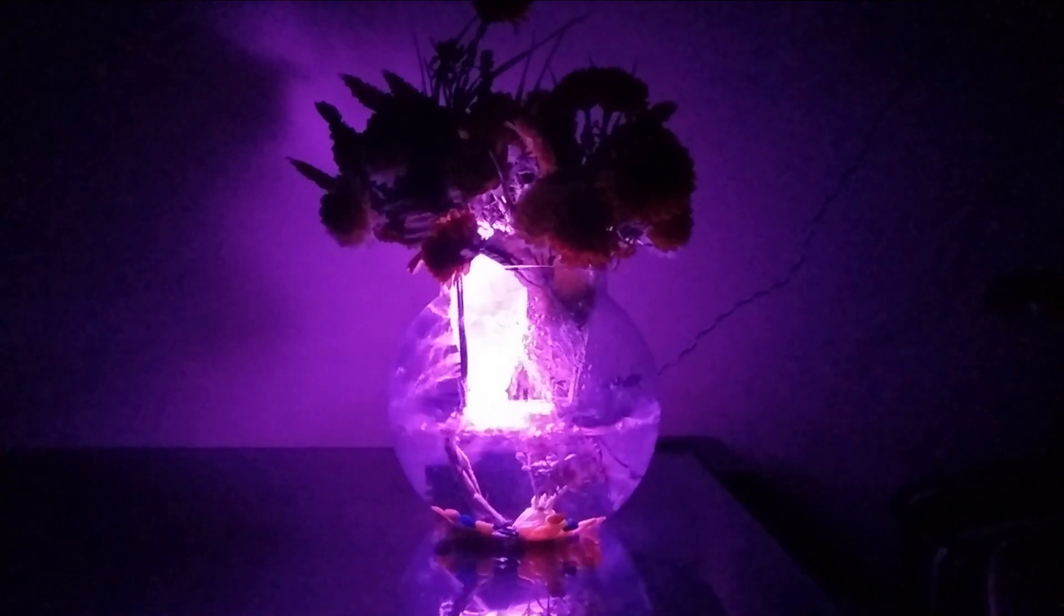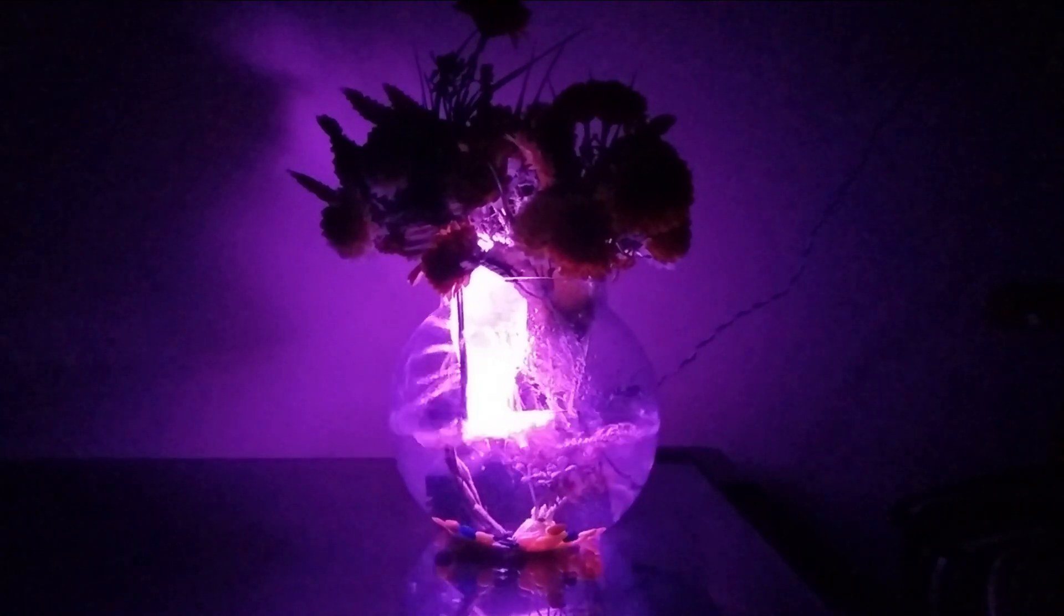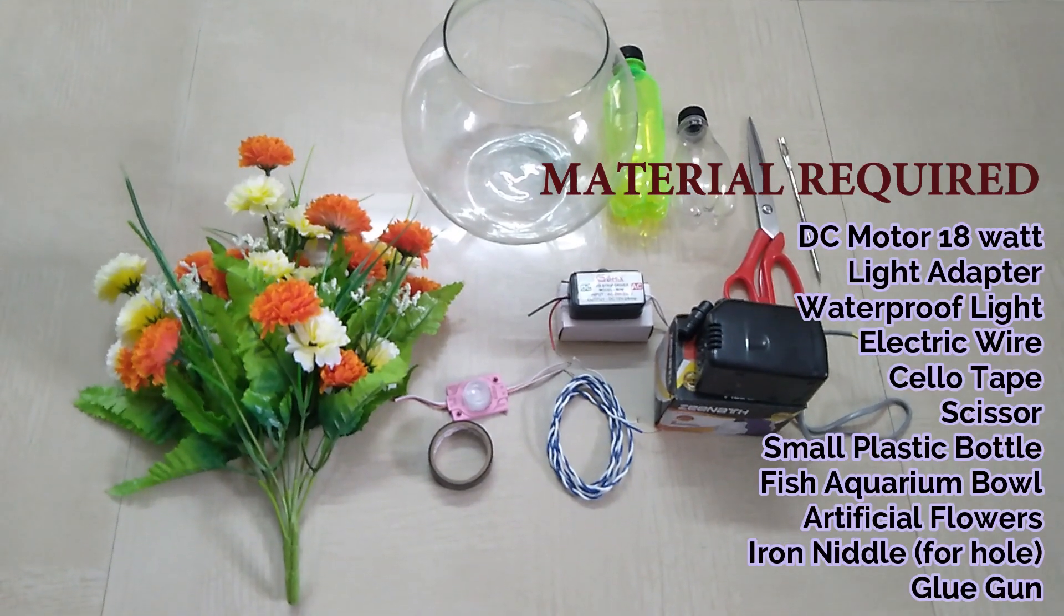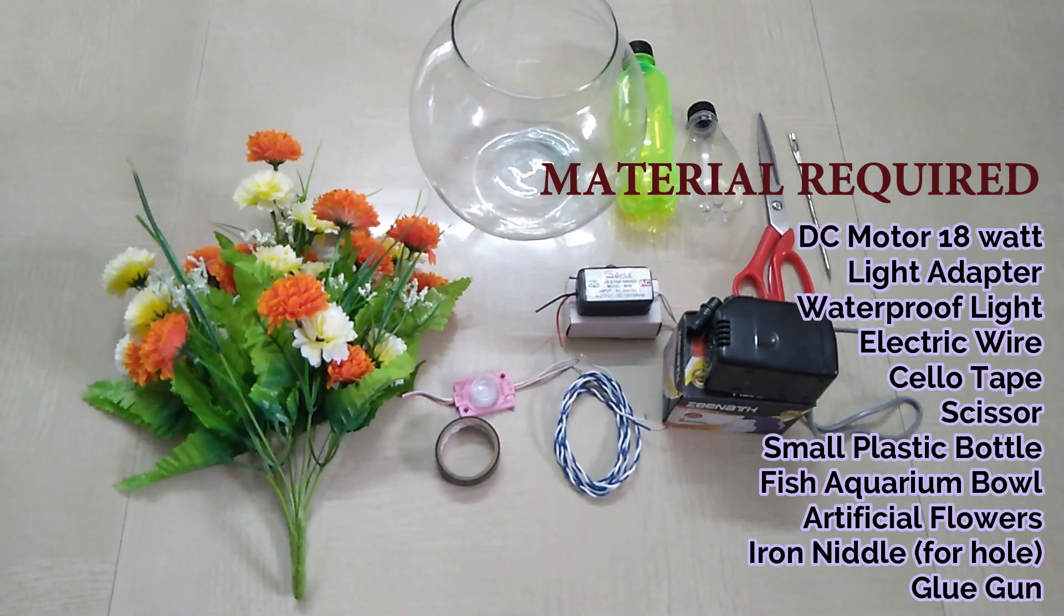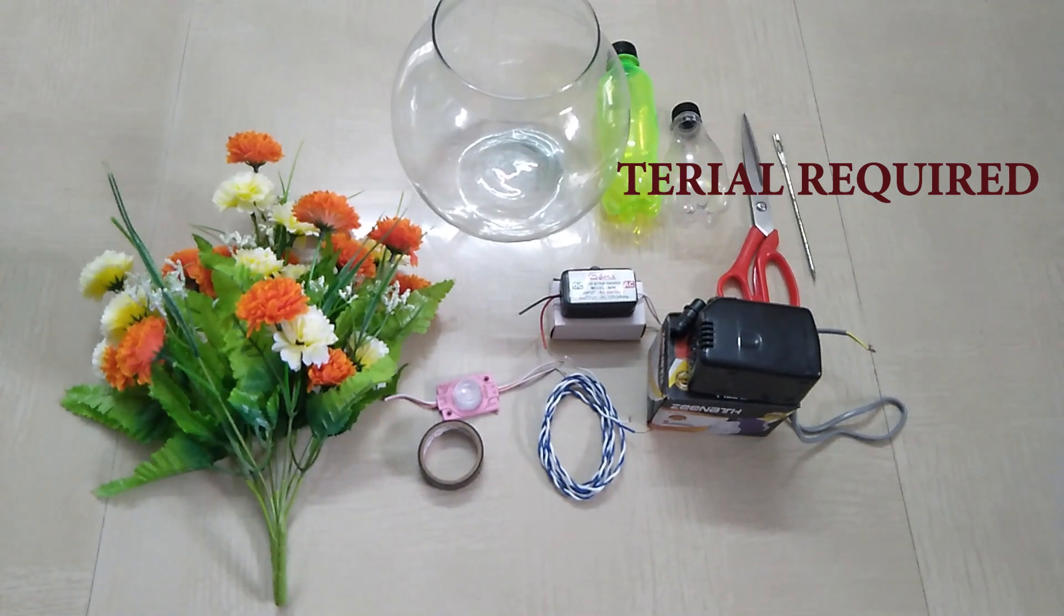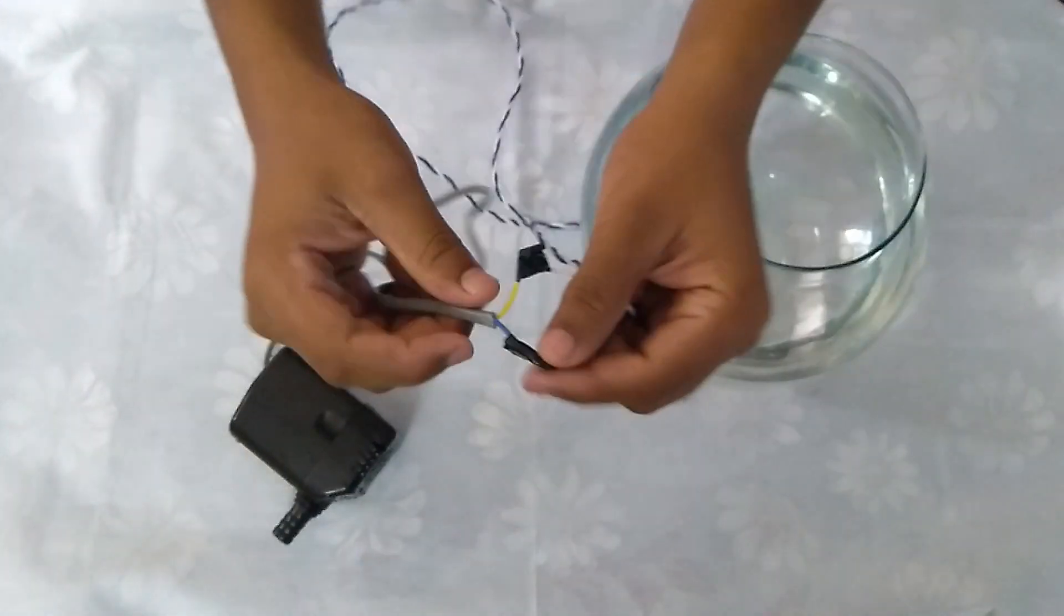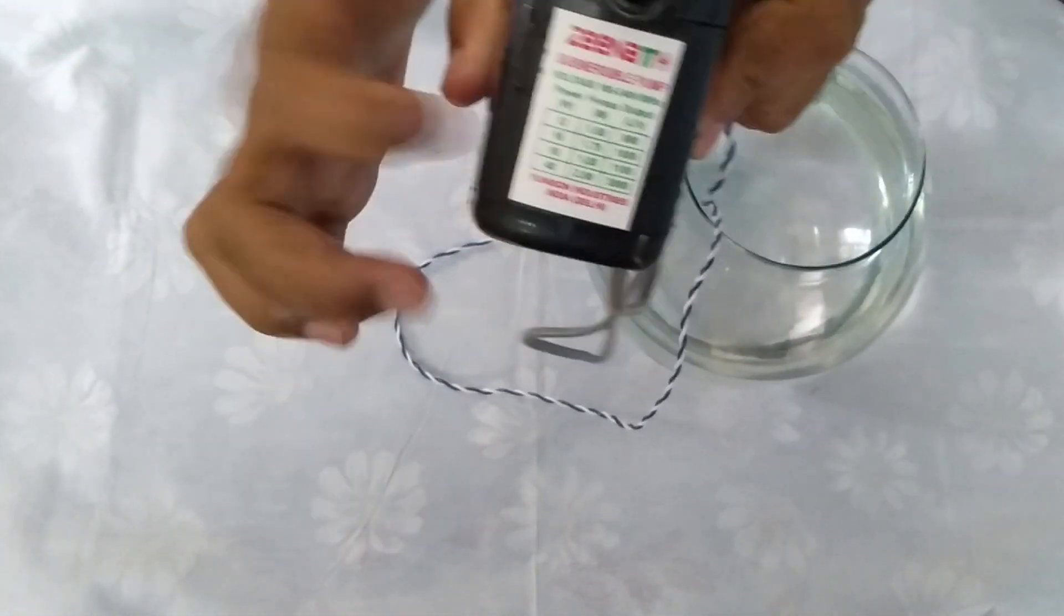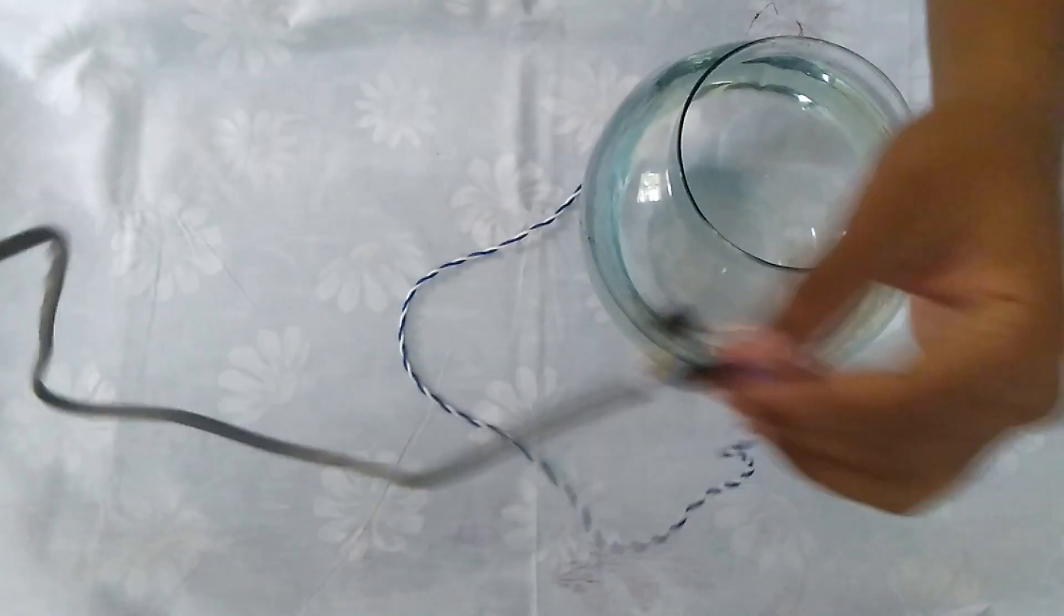Hi guys, today I will show you how to make a water fountain at a very cheap and affordable price. The materials required are as shown. First of all, we have to connect the electric wire to the DC motor which consists of 18 watts.